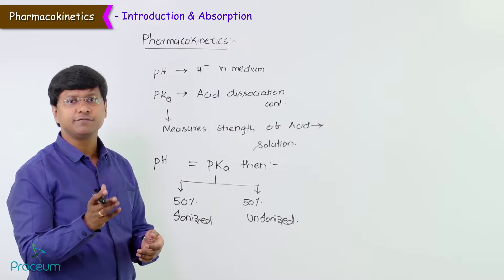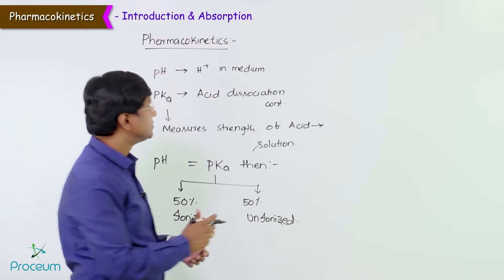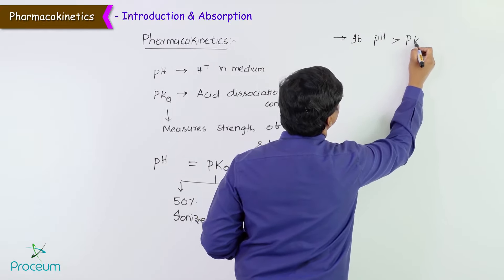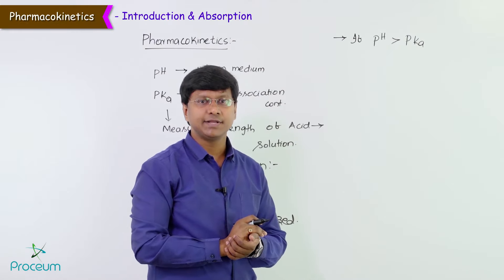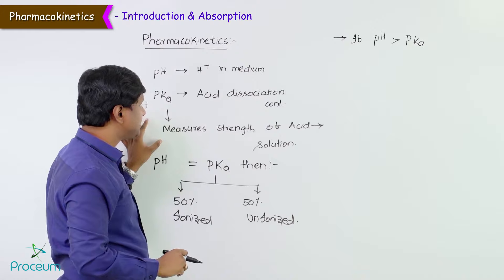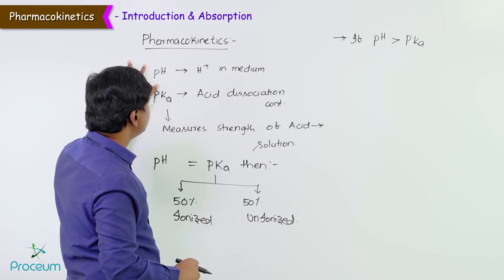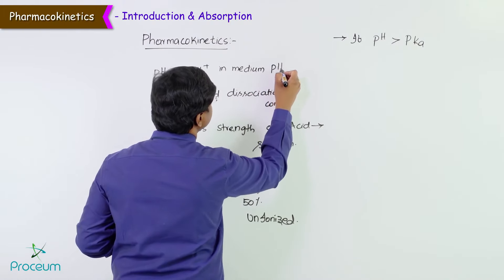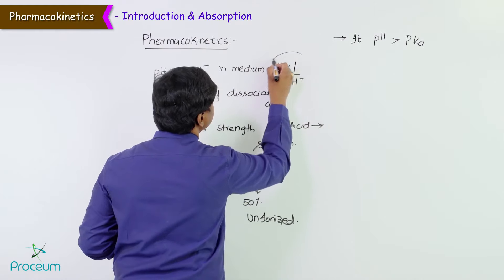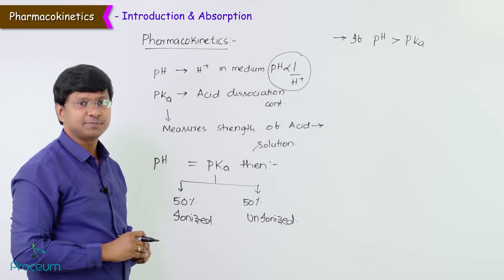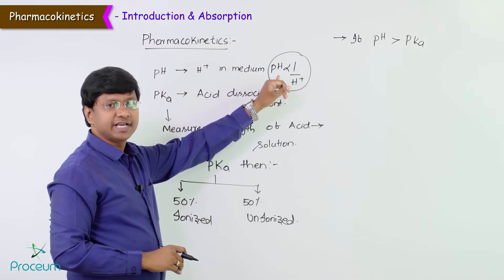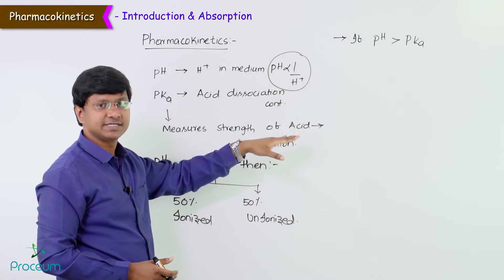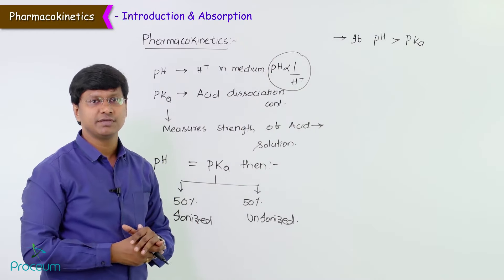If the pH is more than the pKa, the medium becomes alkaline because the H+ ion concentration is less. Remember, pH is inversely proportional to H+ ion concentration — pH is the negative logarithm of H+ ion concentration. If pH is more, H+ ion concentration is less; if pH is less, H+ ion concentration is more.